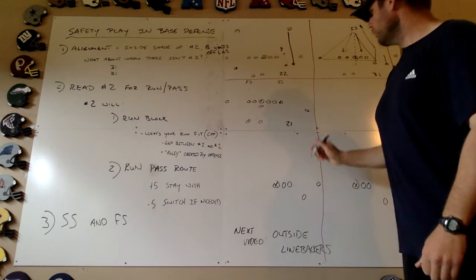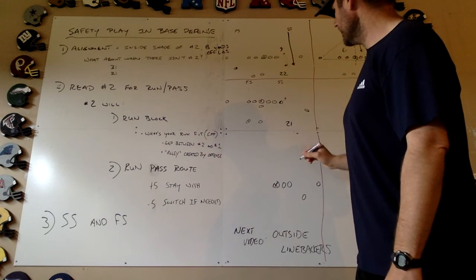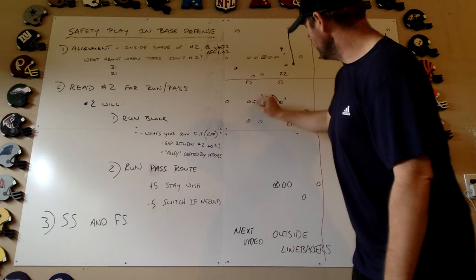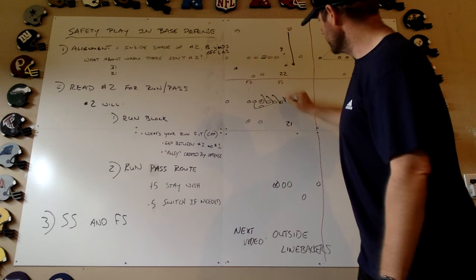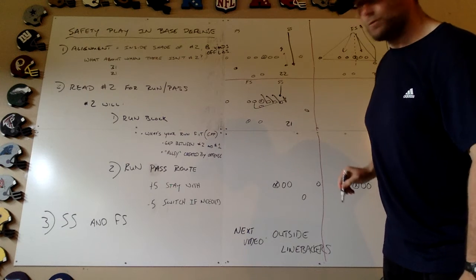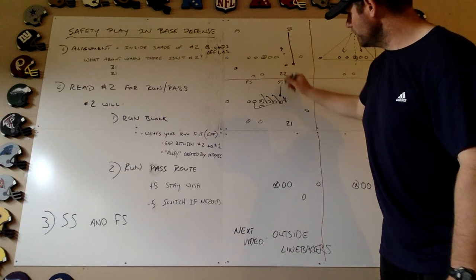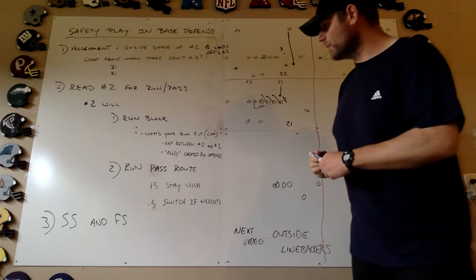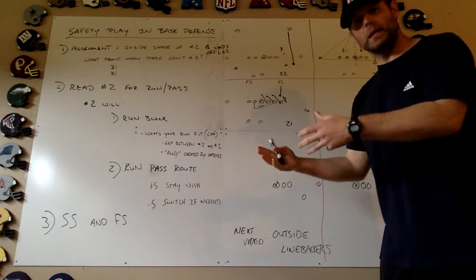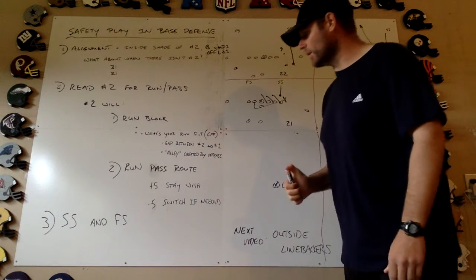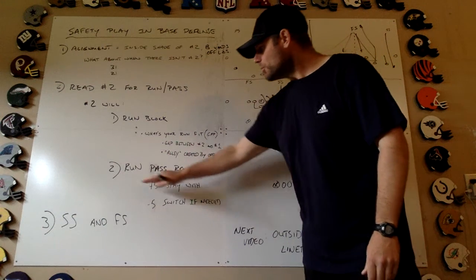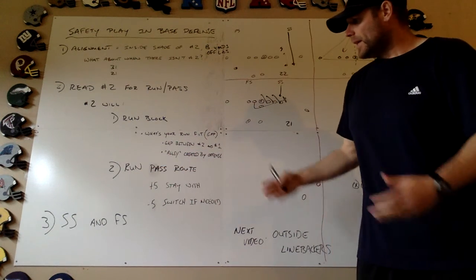Now, what about an alley created by the offense? If we've got our sandbacker attached to the tight end and everybody's scrolling down — running a counter play or kicking out that sandbacker — you now have this alley. You've read run, you come downhill. Offenses create new alleys and gaps all the time by pulling linemen, crisscrossing blockers, and doing all that, so you've got to understand what your run fit is.